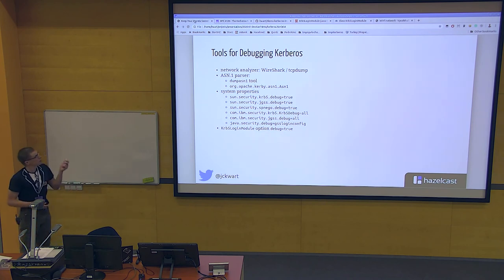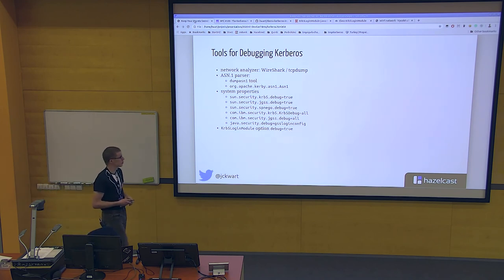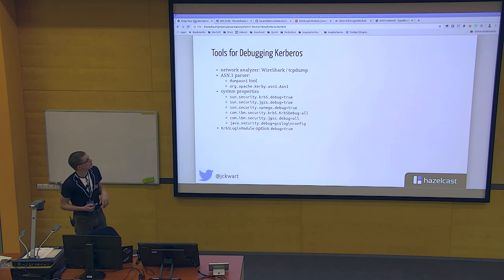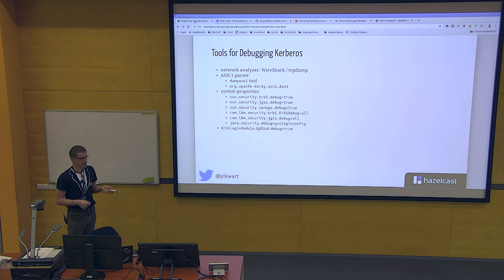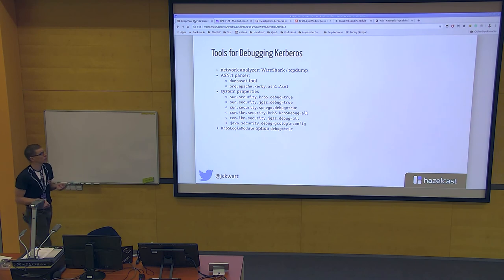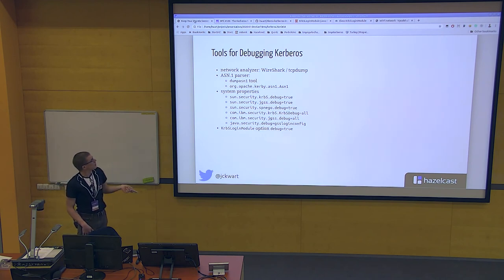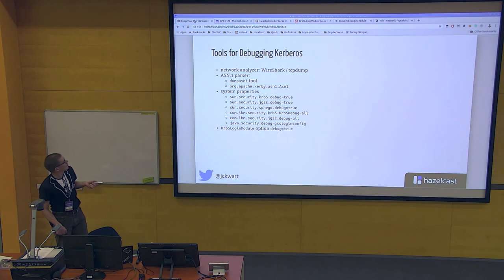A great tool for analyzing the Kerberos protocol is Wireshark, used together with tcpdump. You can dump ASN.1 structures, and Apache Kerby provides an API to parse ASN.1 data structures. There are also several system properties you can set to print debug information for the GSS-API.